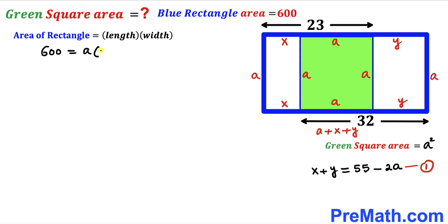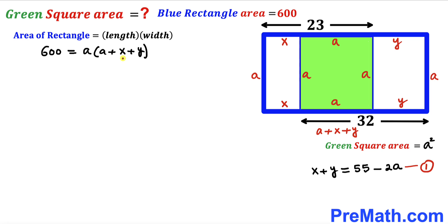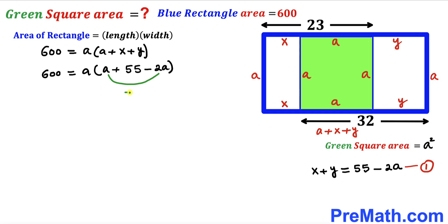Now focusing on the x + y part and substituting equation 1, we replace x + y with 55 − 2a. Combining like terms inside the parentheses — a + (55 − 2a) = 55 − a — we get: 600 = a × (55 − a).